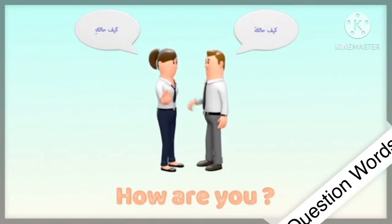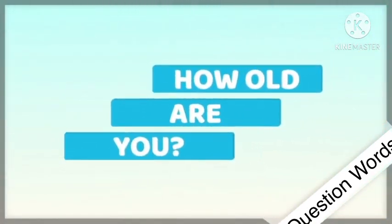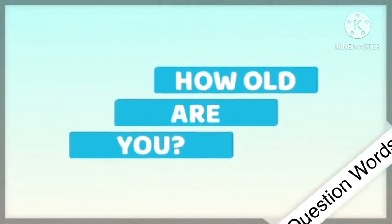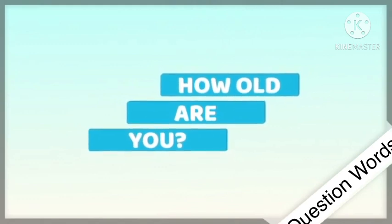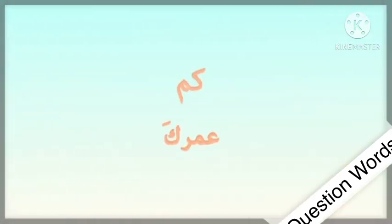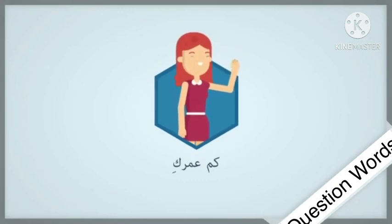The female form of 'how are you' is 'kaifa haluki.' The second type of 'how' uses 'kam': 'How old are you?' In the male form it is 'kam umruka,' and in the female form it is 'kam umruki.'